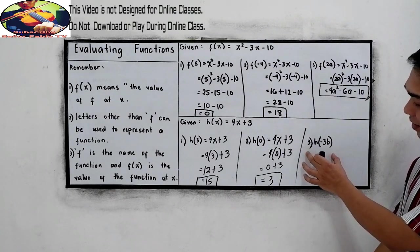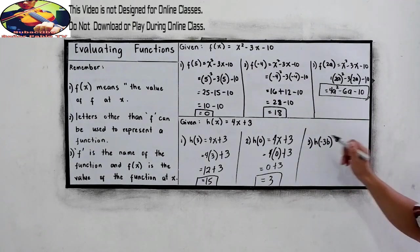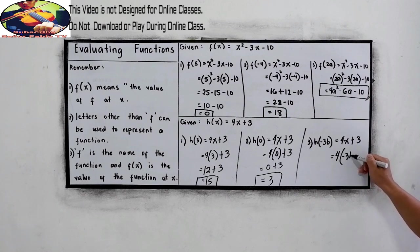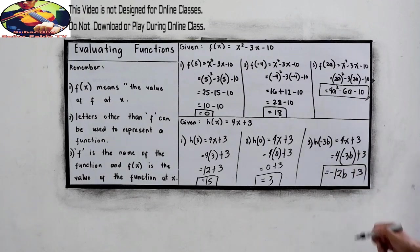And our last number, number 3, h(-3b). So, copy: 4x plus 3. Then, substitute. 4 times negative 3b, plus 3. So, we have 4 times negative 3, that is negative 12b, plus 3. This will be our answer.